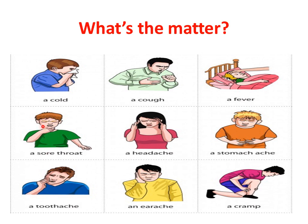Next. What is this? The boy wearing a green shirt — what's the matter with him? He has a sore throat. A sore throat. How about here? She has a headache. A headache. What's the matter with him? He is having a stomach ache. Stomach ache.